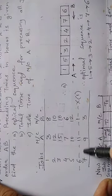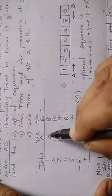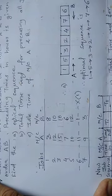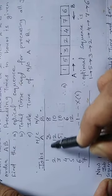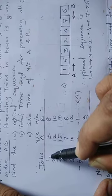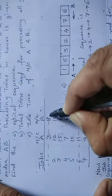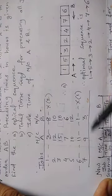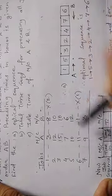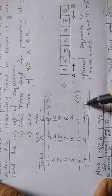From the remaining rows, the next minimum processing time is 3 hours — it appears for job 1 under Machine A. Since it's under Machine A (left side), write job 1 on the left end of the block and delete that row. Next, the minimum is 3 hours for job 7 under Machine B, so write job 7 from the right side and delete that row.